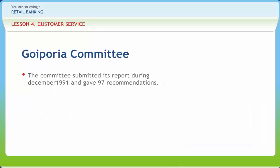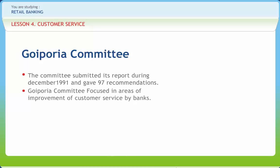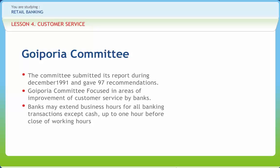The Goiporia Committee submitted its report during December 1991 and gave 97 recommendations. Important among these are: employees' working hours should commence 15 minutes before business hours in metropolitan and urban centers. Banks may extend business hours for all banking transactions except cash up to one hour before close of working hours. All branches with 30 or more staff strength should provide 'May I Help You' counters. Tellers should pay cash up to Rs. 5,000 and non-cash transactions up to Rs. 10,000. Facility of instant credit of outstation instruments should be available for instruments of up to Rs. 5,000. Before launching any scheme, the government may consult the RBI, NABARD, and IBA to make it compatible for easy implementation.